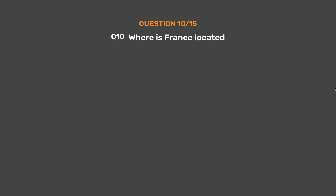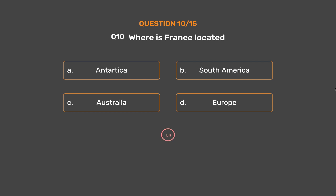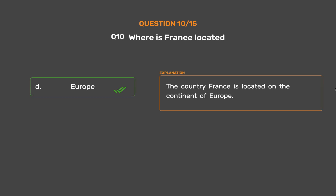Question number ten. Where is France located? Option A - Antarctica, Option B - South America, Option C - Australia, Option D - Europe. The correct answer is Option D: Europe. The country France is located on the continent of Europe.